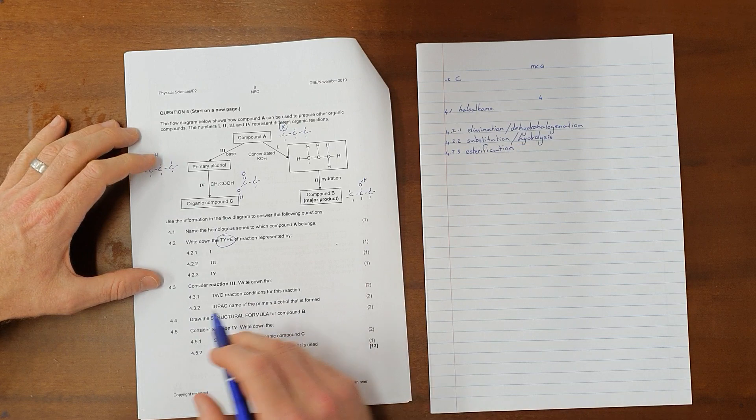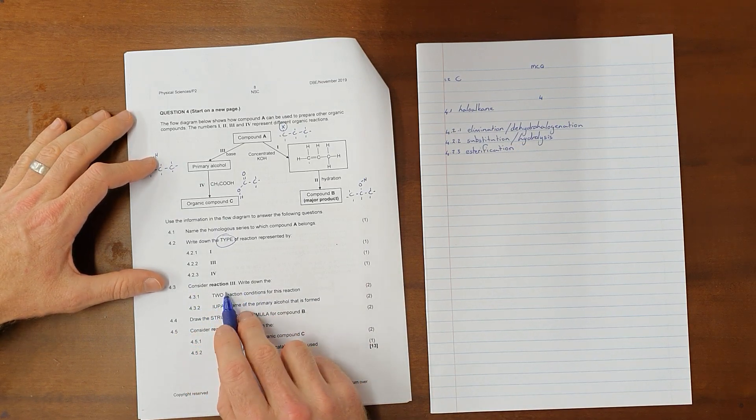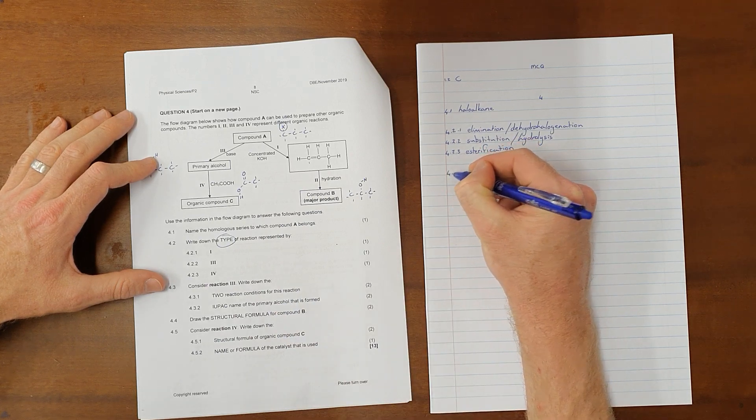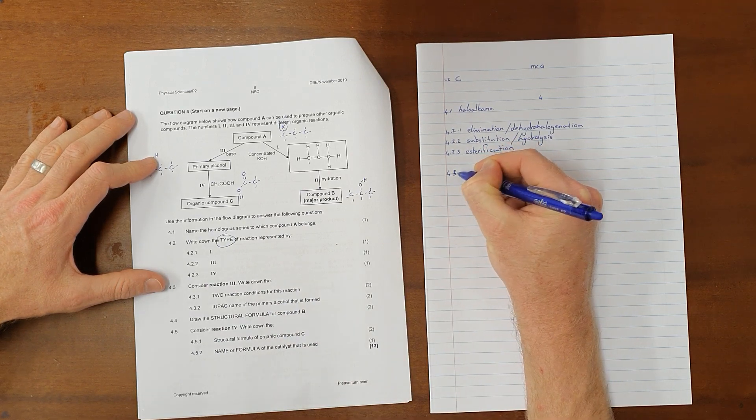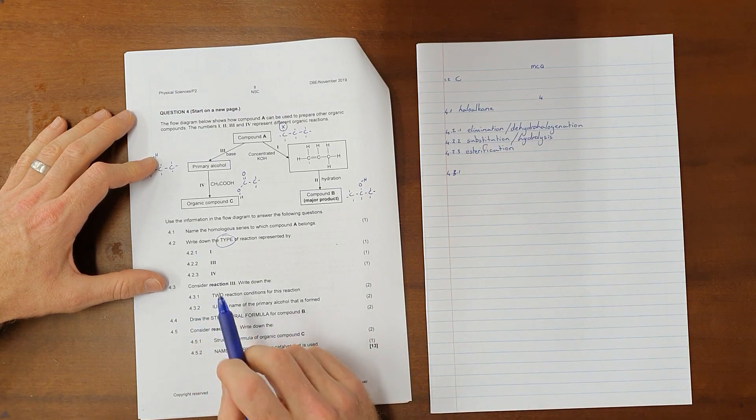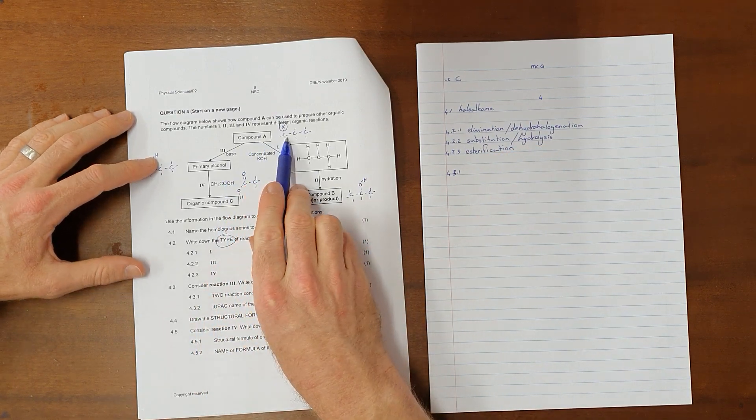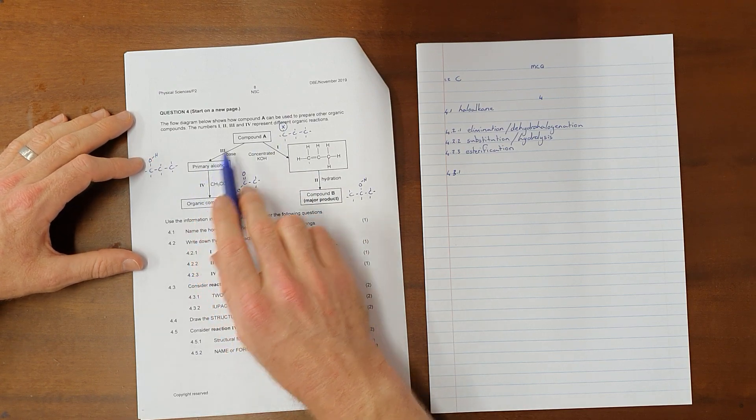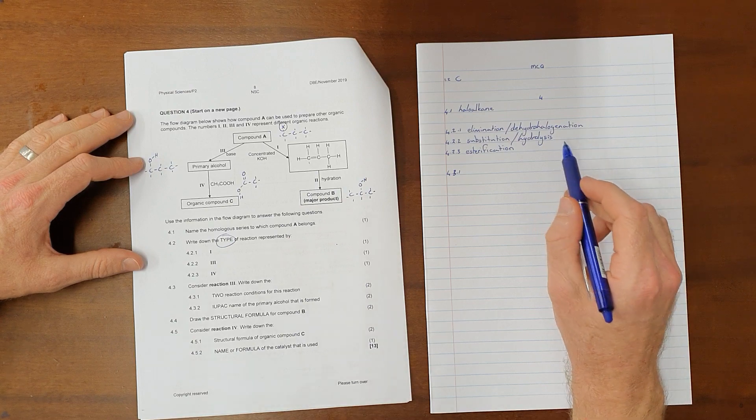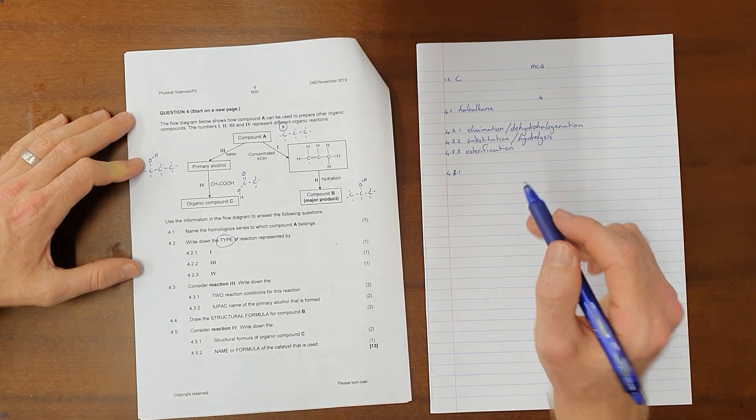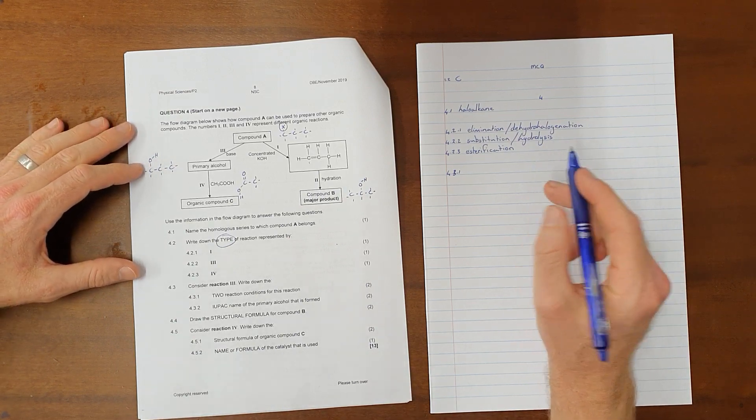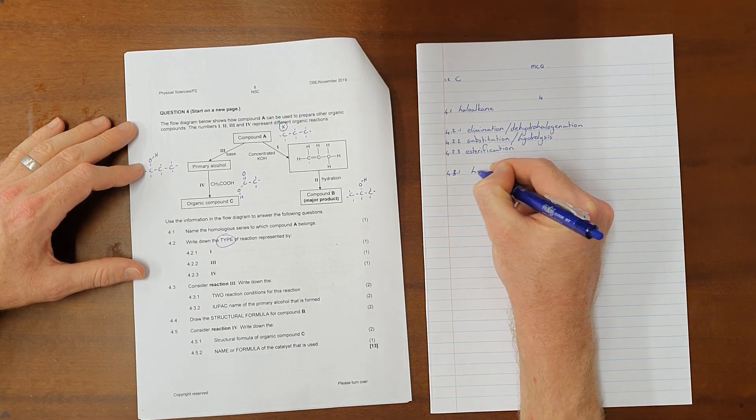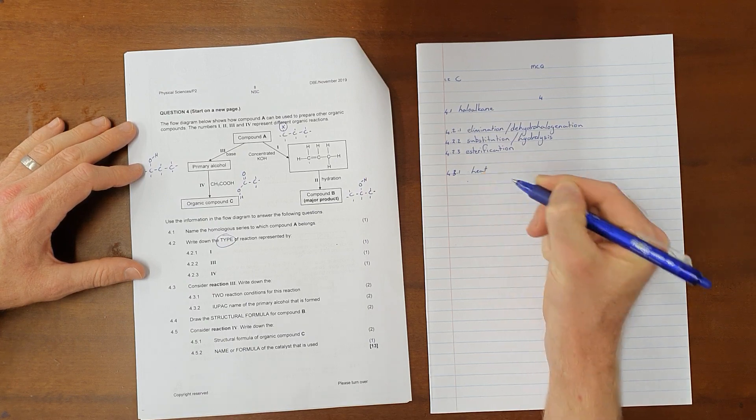Question 4.3 reads as follows: Consider reaction 3. Write down the two reaction conditions for this reaction. Reaction 3, once again, we can see is the reaction from a haloalkane to a primary alcohol, which we know already is a substitution or a hydrolysis reaction. There are, strictly speaking, three conditions for this reaction. Any two of those three were accepted. So, we could have said either mild heat. We could also have mentioned that there needs to be a strong base present.